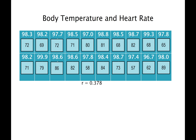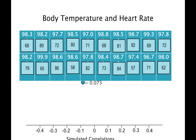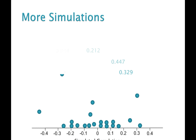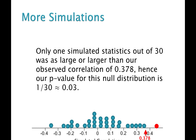There's an applet to do this, but first here's the animation. We've got the heart rates written on cards, and we shuffle those up and match them to different body temperatures. For that random shuffle, the correlation came out to be between 0 and 0.1 — we're using correlation to summarize this time. If we do it again, we get different values of the correlation. All the different correlations end up centered around 0 because we're assuming no relationship. Out of this set, only one was as extreme as our sample correlation of 0.378, giving an estimated p-value of 0.03.